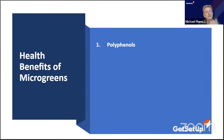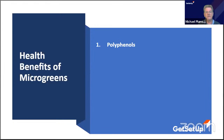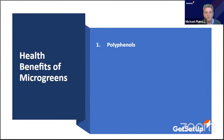Phytonutrients also help with Alzheimer's disease, cancer, cardiovascular diseases, and diabetes. The polyphenols and everything under that umbrella — you don't really need to know the details, you just need to know they work. They help build a strong immune system.